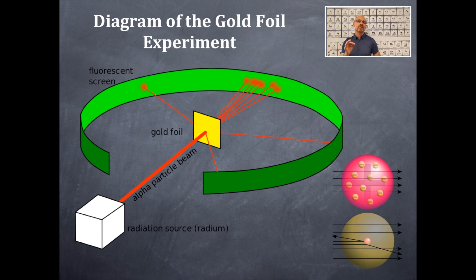Every now and then, they were deflected when they got close to that orange central nucleus. And every now and then, even less than that, they were actually deflected back right towards the radiation source.